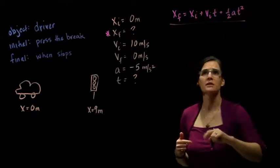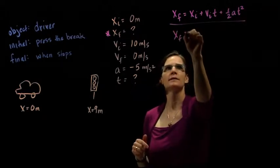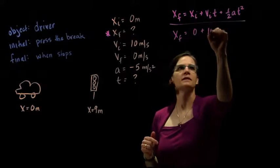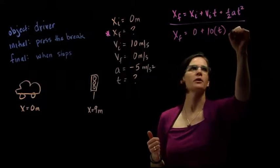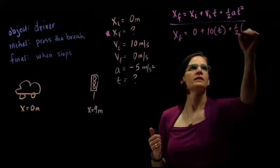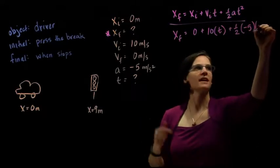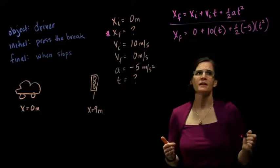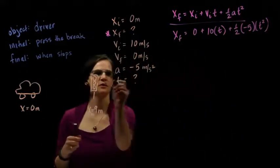So, now let's look at our list. x final is a question mark. So, that stays its variable. x initial is 0, v initial is 10, t is also a question mark, so that remains its variable, plus one half acceleration, negative 5 times our t again, squared. So, I can't solve this just yet. I don't know t, which means t becomes a variable of interest.